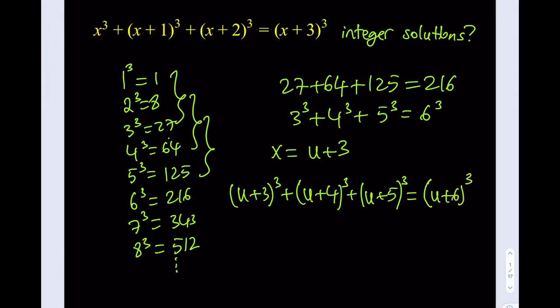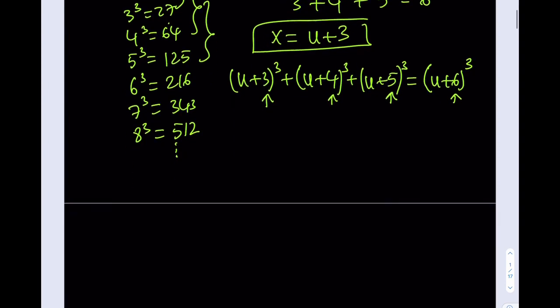Now, what is the significance of using this x = u + 3 as a substitution? The significance is we're going to be getting constant terms from here that are 3³ + 4³ + 5³, which is equal to 6³. And you're going to see what happens in a little bit. So stay tuned. Let's go ahead and simplify this.